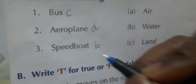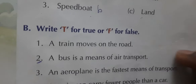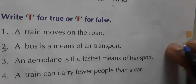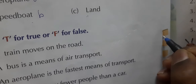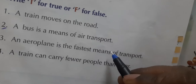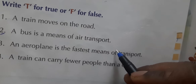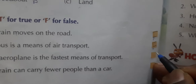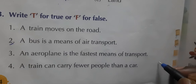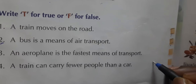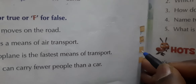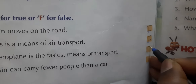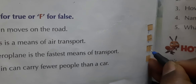Now true or false. 'Train moves on the road' — this is false. 'Bus is a means of air transport' — this is also false. 'Aeroplane is the fastest means of transport' — this is true.